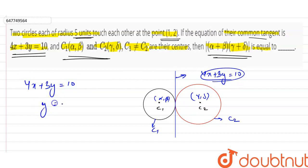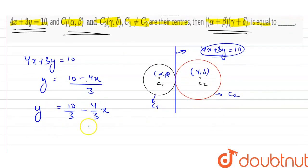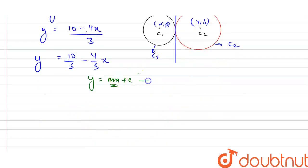Tangent की equation है 4x + 3y = 10, और y = (10 − 4x) / 3, और हम इसको लिख सकते हैं y = 10/3 − (4/3)x। Standard form of a line है y = mx + c, where m is the slope। इस equation को compare करें तो m1 = −4/3। अब एक line draw कर लेते हैं जो C1 को C2 से connect करती है।